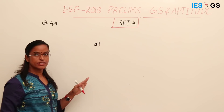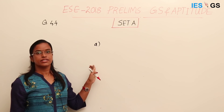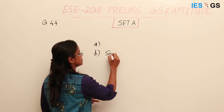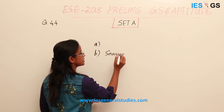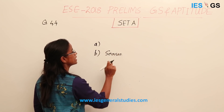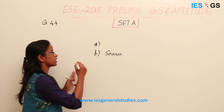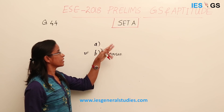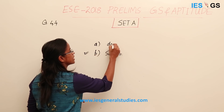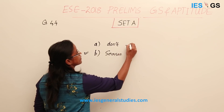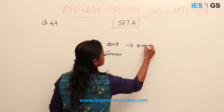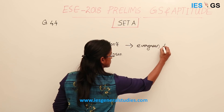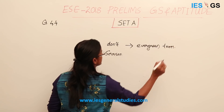The main characteristic of deciduous trees is that they shed their leaves as per the seasons. During the dry season, they shed their leaves, which means they shed their leaves annually. Trees that do not shed their leaves are called evergreen trees, because they remain green throughout the year.